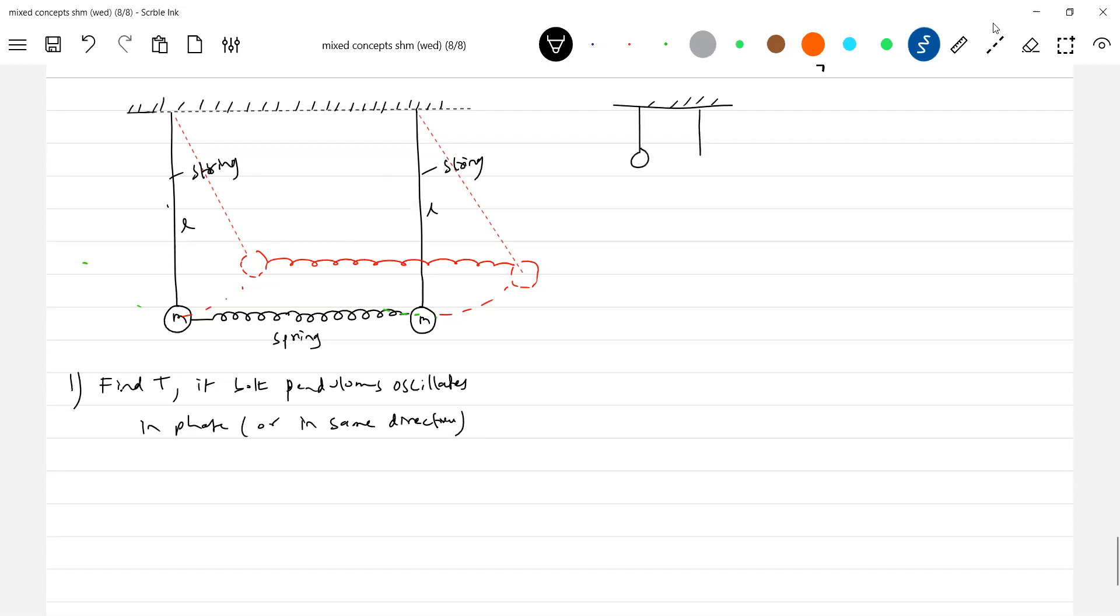Initially they're like this, then both are in phase. Pendulums are in phase. What is the time period of oscillation? How to calculate the time period?